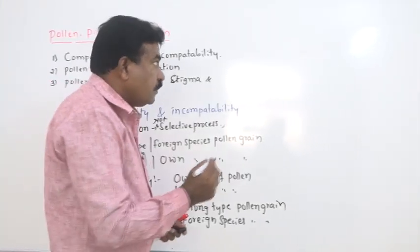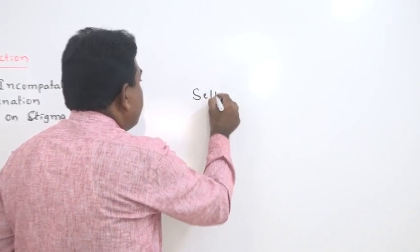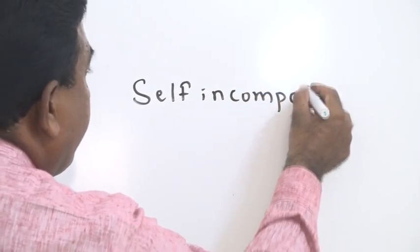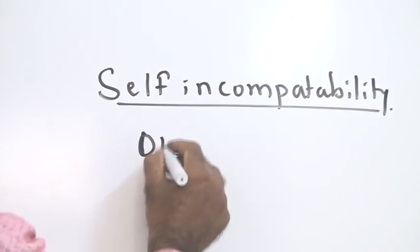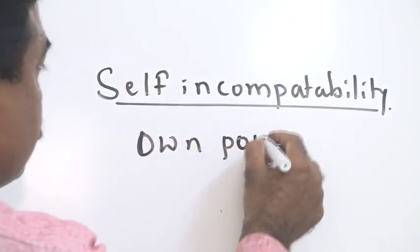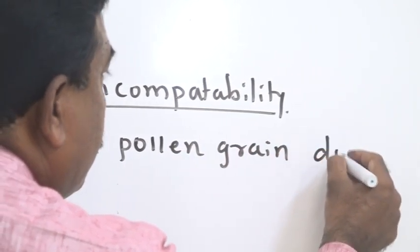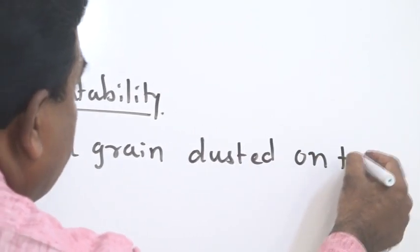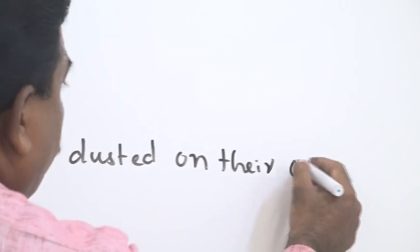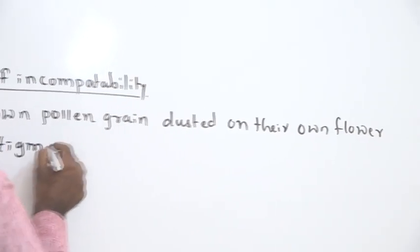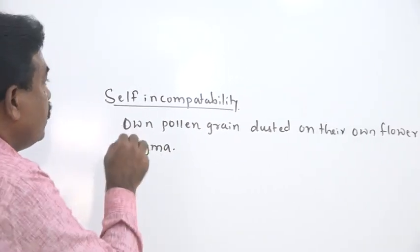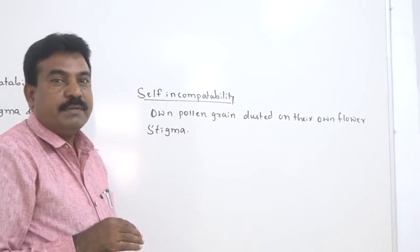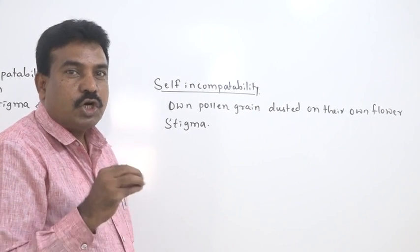One of the most important adaptations we see is what we call self-incompatibility. In this case, the plant's own pollen grain is dusted on its own flower's stigma — which is indirectly called self-pollination or autogamy. At that time, the pollen grain may not germinate. That process is called self-incompatibility. Due to self-incompatibility, in most flowers there is a greater chance of cross-pollination.